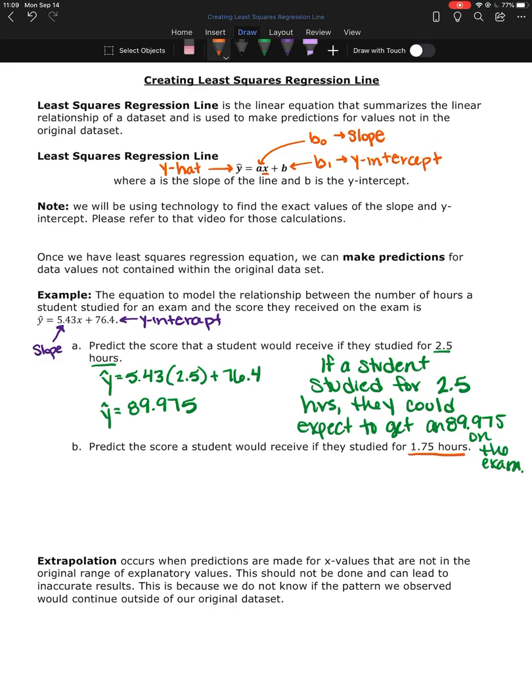So what if a student studied for 1.75 hours, what would they see on the exam? So we're going to do the same thing. But now we're going to plug in 1.75 for the x.